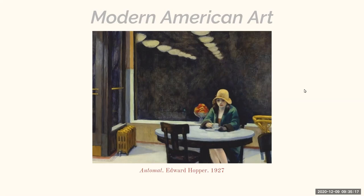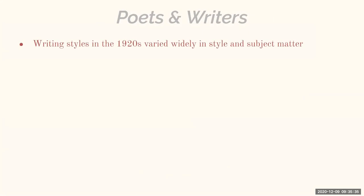Now let's move on to things I know more about — writers and poets. Writing styles in the 1920s varied widely in style and subject matter, and this makes sense. We have many different genres of writing today, and you can't classify all writers as writing the same way. In the 1920s, that wide variety fits the theme — it's fragmented, everybody is doing their own thing. But there are some common themes amongst writings in the 1920s.